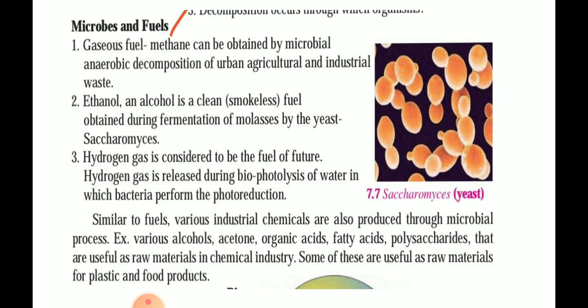Gaseous fuel can be obtained by the decomposition of this waste. For example, methane is a fuel which burns completely because it is a saturated hydrocarbon. Ethanol is an alcohol and is a clean fuel. Ethanol is obtained by the fermentation of molasses as well as by the fermentation of different types of cellulose by the yeast.